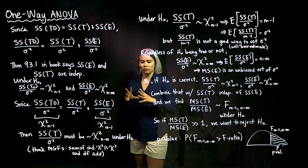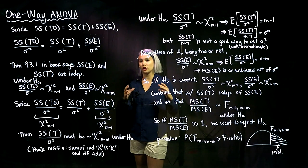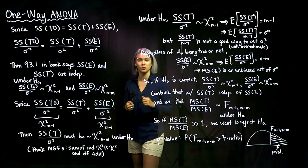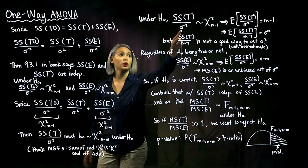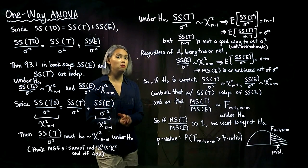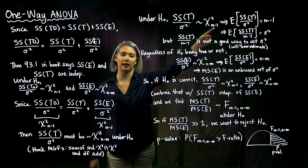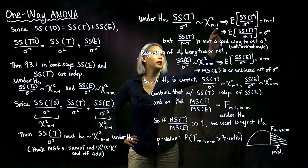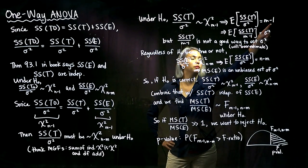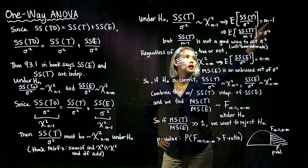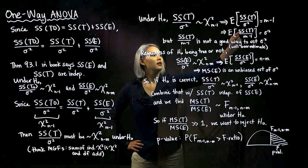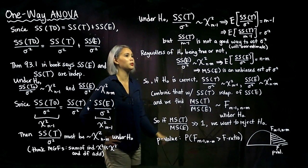In one-way ANOVA we're looking at comparing the variability within groups to the variability between groups. Under the null hypothesis, the treatment sum of squares divided by sigma-squared is chi-squared distributed with m minus 1 degrees of freedom. Remember, the mean of a chi-squared random variable equals its degrees of freedom, so E[SST/σ²] = m minus 1. Since m minus 1 and sigma-squared are constants, we can rearrange: E[SST / (m minus 1)] = sigma-squared under the null hypothesis.